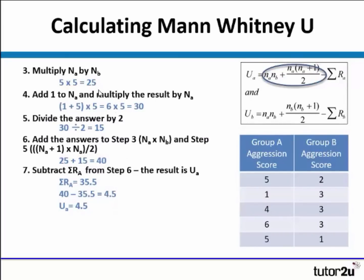The next couple of steps are quite straightforward. We have to multiply, as you can see in the formula, NA by NB. We have five participants in each group, so 5 times 5 is 25. The next part: we have to add 1 to NA and times that by itself, so 1 add 5 is 6, times 5 is 30. Then we divide that answer by 2, which gives us 15. So 25 add 15 is 40.